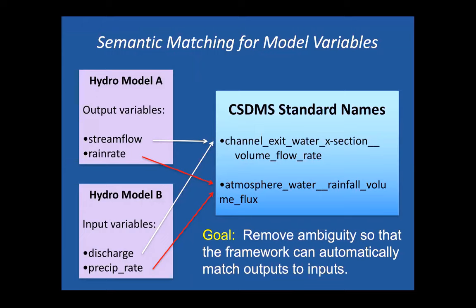We want a system with many components and many variables each that can be coupled automatically by machine. With standard names, the part before the double underscore in a name is the object and the part after it is a very specific quantity. If the author of each model makes a mapping from their internal variable to one of our standard names, then when the framework has the two mappings, it can automatically see that these are compatible for coupling without asking a human — but to make it reliable, an expert must sign off on the mapping.